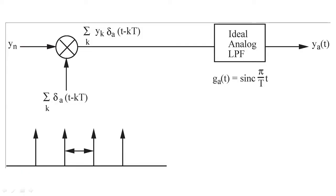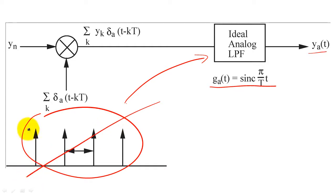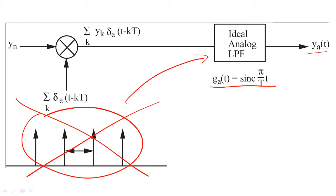In a previous lecture, we showed that the ideal D2A used an ideal low-pass filter to convert a series of impulse functions with heights determined by y of n to create y of a. This system is impossible to realize because we cannot create the perfect impulse train needed to implement the system. Therefore, we typically use a different system that is easier to implement.